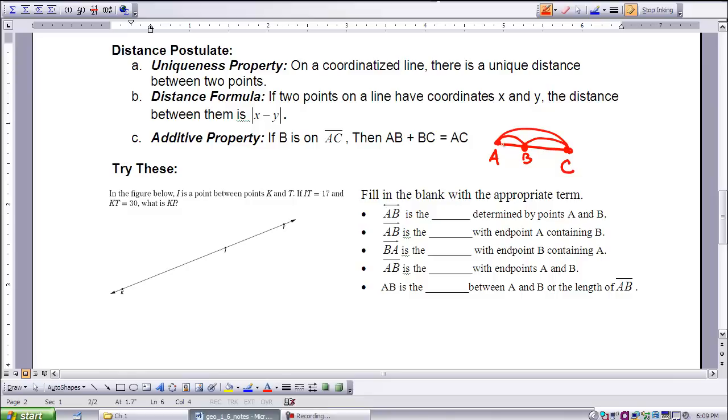I would like you to try this first example here in the figure below. I is the point between points K and T, so my segment is KT, and I is in between. If IT, the distance from I to T, remember, two letters next to each other refers to distance, so my distance is 17. And KT, the whole thing, is 30. What is KI? So what is this missing piece? And I can use my additive property to say KI plus IT is equal to KT.